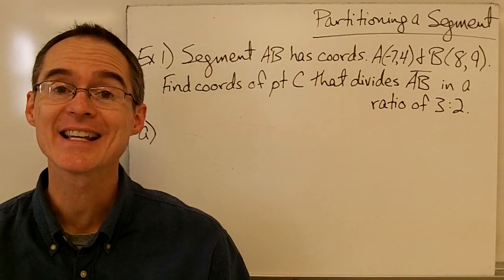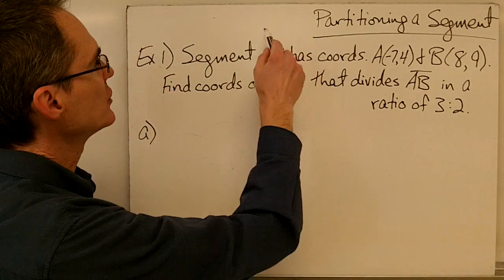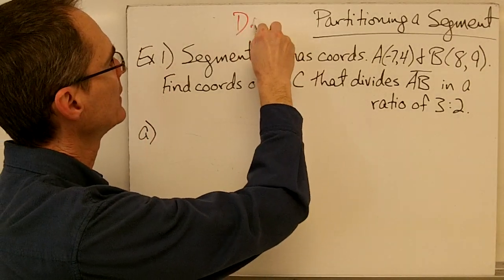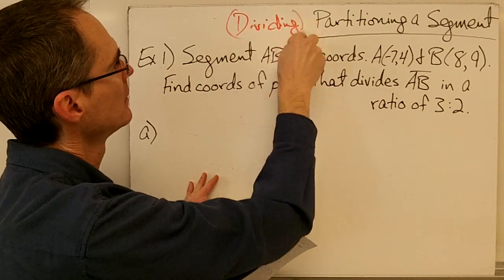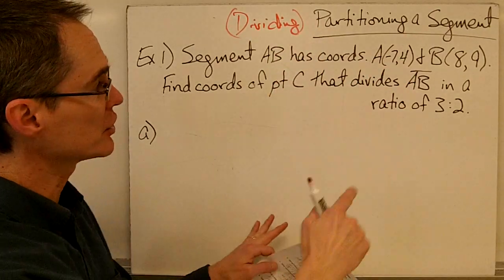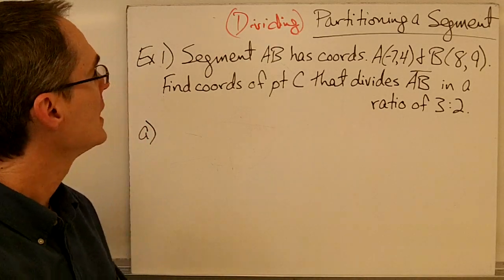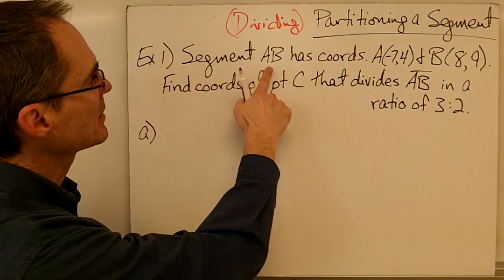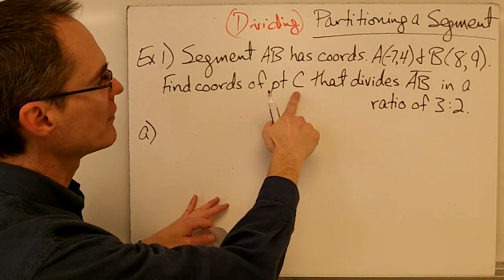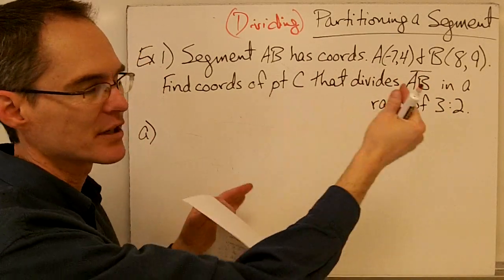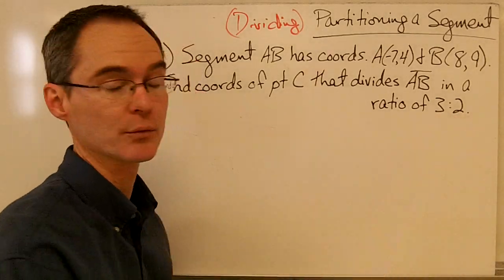In this video we're going to be partitioning a segment into a given ratio. Partitioning is just another word for dividing. So basically we're going to be dividing segment AB into a ratio of 3 to 2. Our example gives us the coordinates of segment AB, and we're looking for the coordinates of point C that's going to divide that segment into the ratio of 3 to 2.